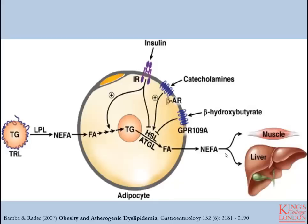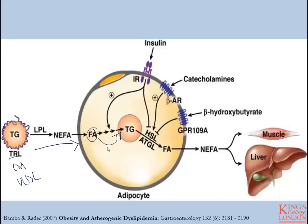From the perspective of the adipocyte, triglyceride is constantly entering the adipocyte in the fed state via triglyceride-rich lipoproteins — either chylomicrons or VLDL particles depending on the state of energy intake. Lipoprotein lipase breaks down these triglycerides, allowing the NEFA to be taken up by receptors and fatty acid transporters in the adipocyte. These fatty acids are then restored as triglyceride inside the cell, where they remain until needed.